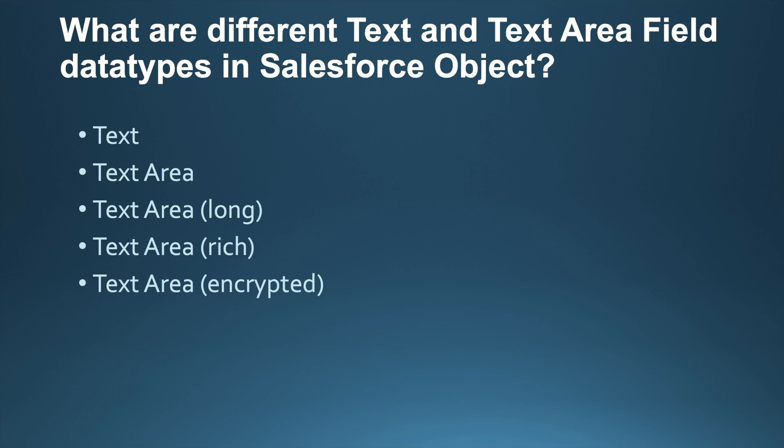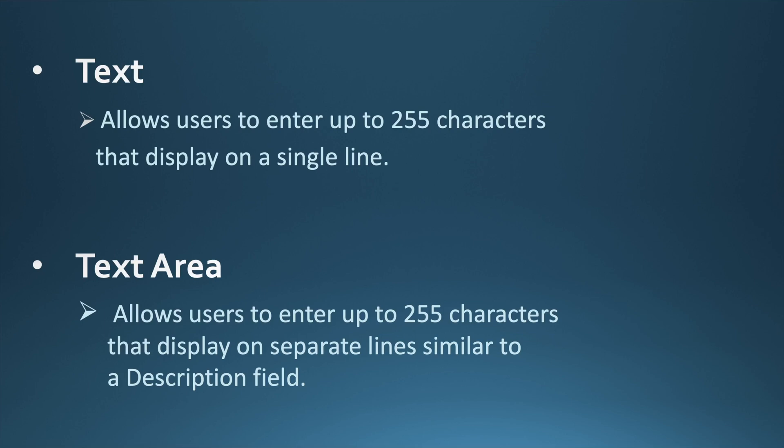Let's start with the first field, which is Text. A Text field allows the user to enter a combination of letters, numbers, or symbols. A developer can set its length up to 255 characters. Next is Text Area, which also allows the user to enter up to 255 characters — same as the Text field. But what's the difference between Text and Text Area?